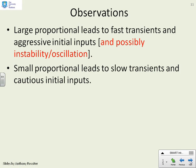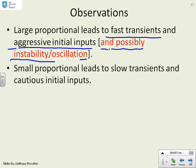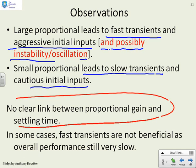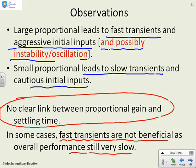The observations: a large proportional will give you fast transients and aggressive initial inputs. In practice, it can also give you instability and oscillation if the proportional is made too large. A small proportional leads to slow transients and cautious initial inputs. However, the key point is we didn't really observe any clear link between the proportional gain and the settling time. In some cases, fast transients could not be beneficial at all, as the overall performance might still be very slow — you could get a faster transient but a slower settling time, so you're better off going with a smaller proportional.